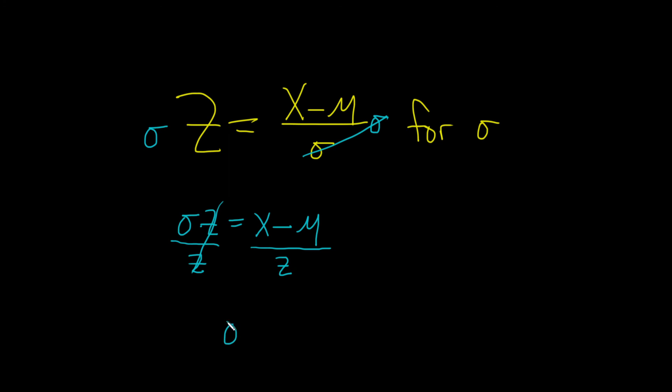So these cancel, so you get sigma equals x minus mu all divided by z. And that would be the final answer. I hope this video has been helpful.